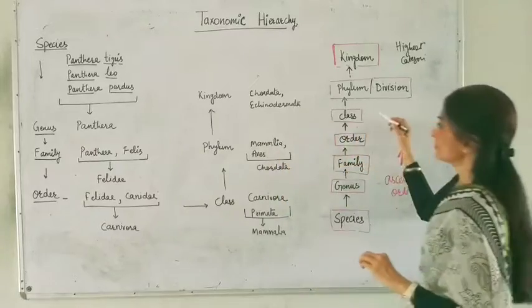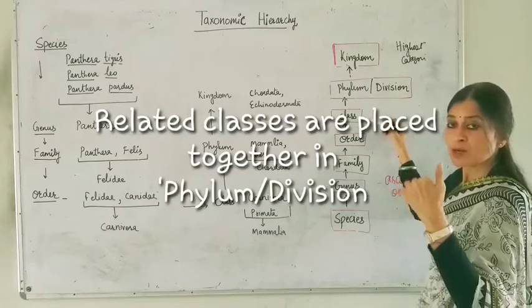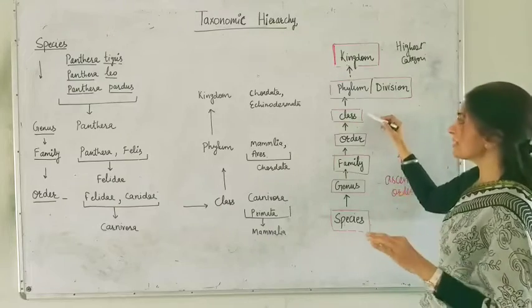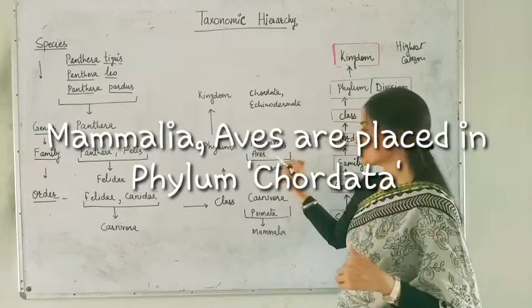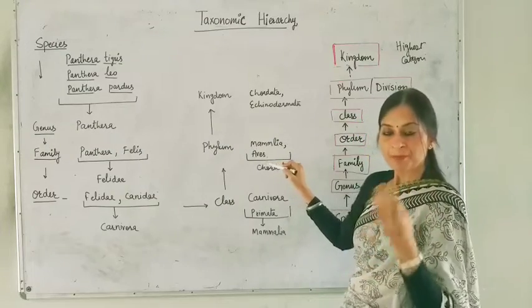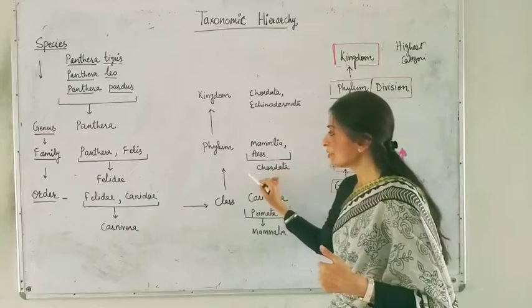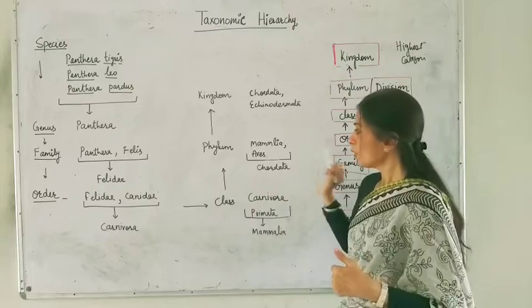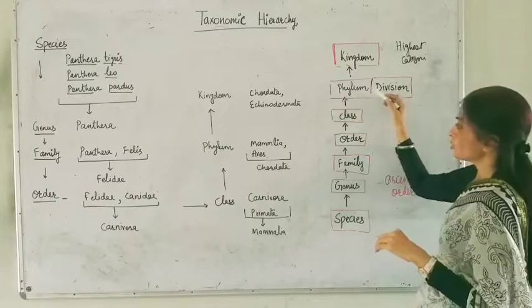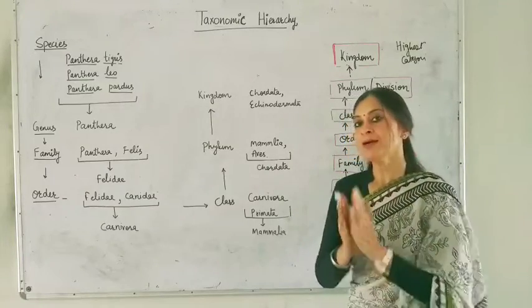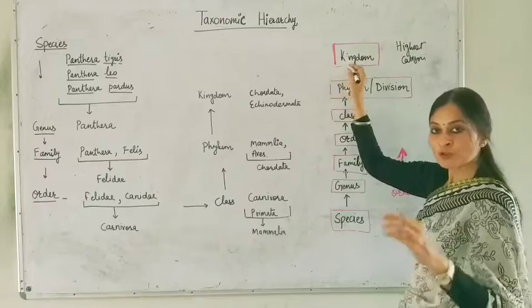Now, common classes — the classes which are related to each other and share some features — are placed in phylum. For example, Mammalia class shares some features with other classes such as birds, amphibians, and reptiles. These classes are placed in a common phylum called Chordata.